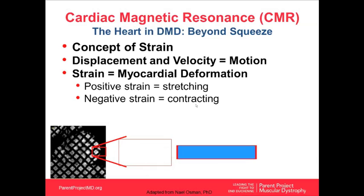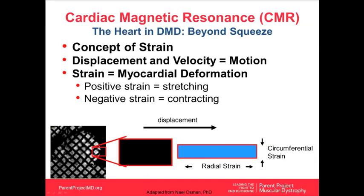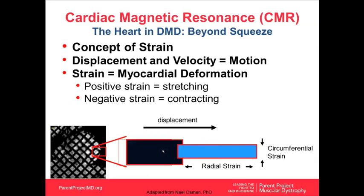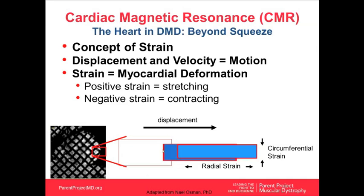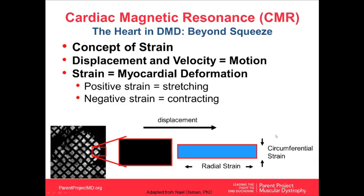Let me give you a sense of the concept of strain. Using tag imaging, displacement is when the heart moves from one position to another, and velocity is how fast the heart moves. Strain, however, is measurement of cardiac deformation — what the tissue is actually doing — and allows direct assessment of the degree of regional myocardial deformation. Positive strain is stretching; negative strain is contracting. We're concentrating on circumferential strain, looking at how well the tissue is actually shortening.